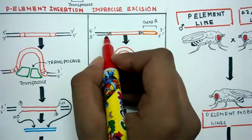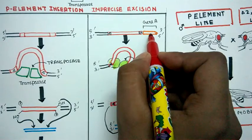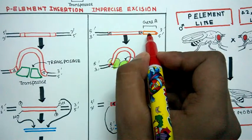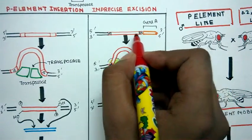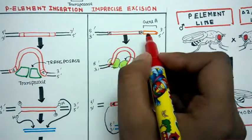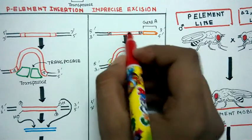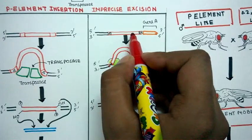Here, our P-element which is sitting near a gene, gene of interest, and the gene that we want to mutate, is actually transposase deficient. It can't produce its own transposase. That is why it needs help from other sources which can produce transposase.